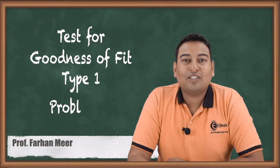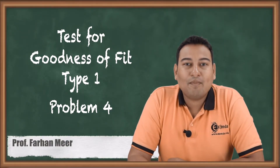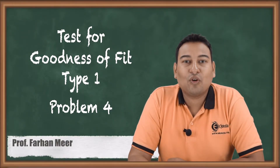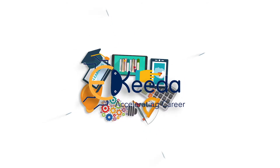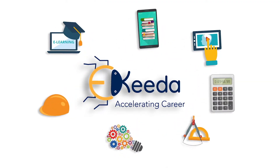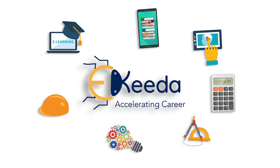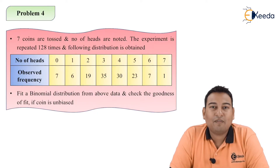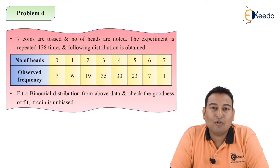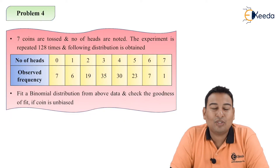Hello friends, in this video we'll be discussing one more example on chi-square test — test for goodness of fit. This is our fourth example. In the first two examples we found out expected frequency by taking average, and in the third example we found out expected frequency in the ratio 9:3:3:1.